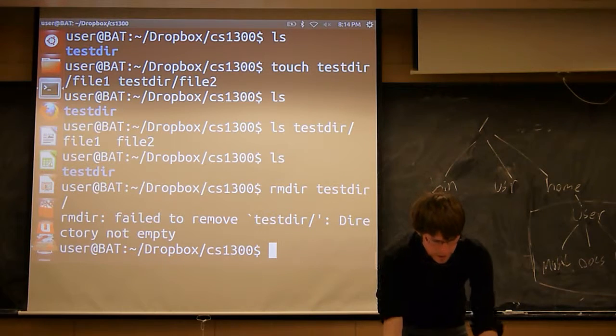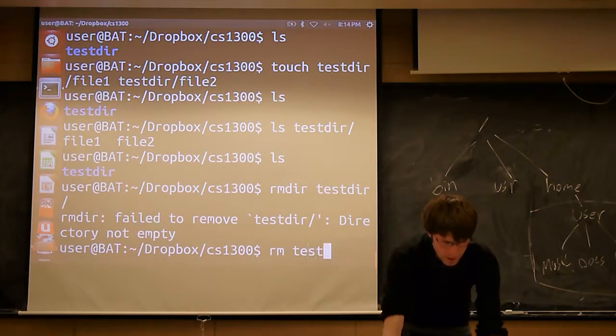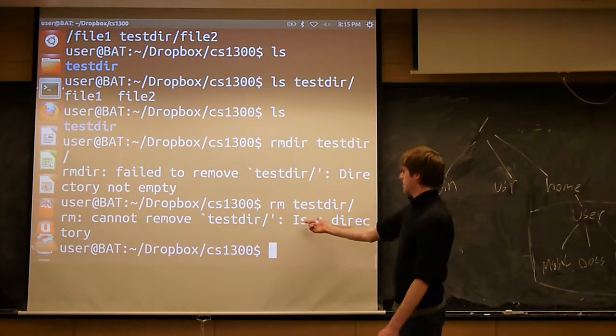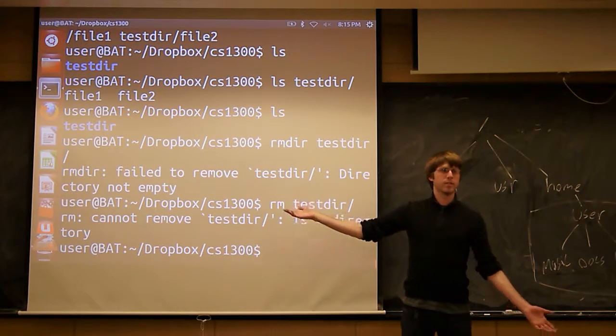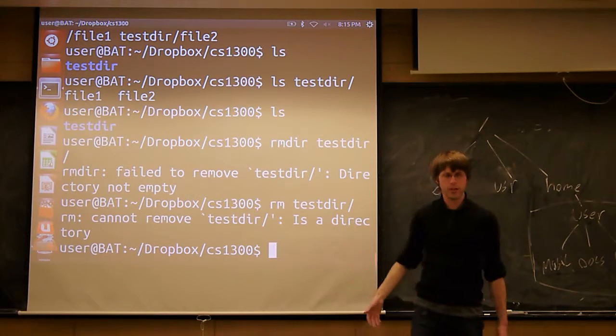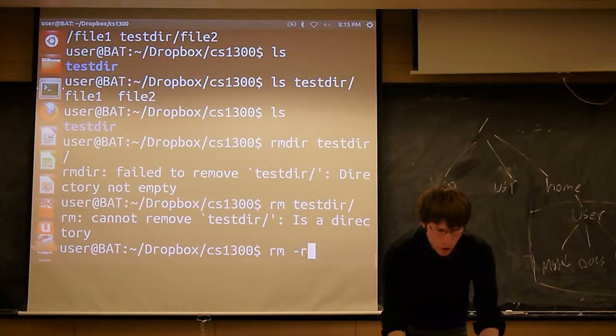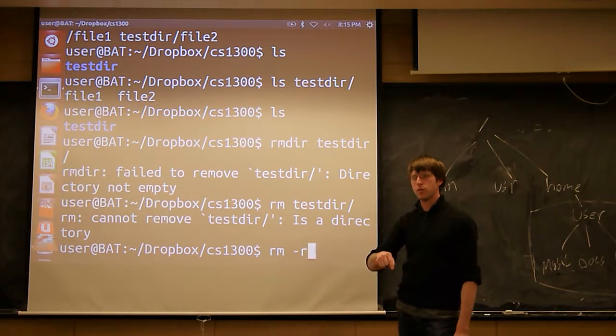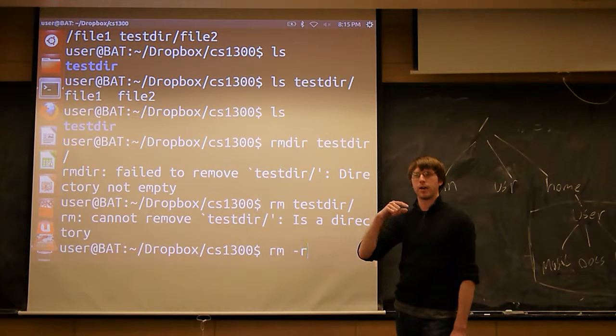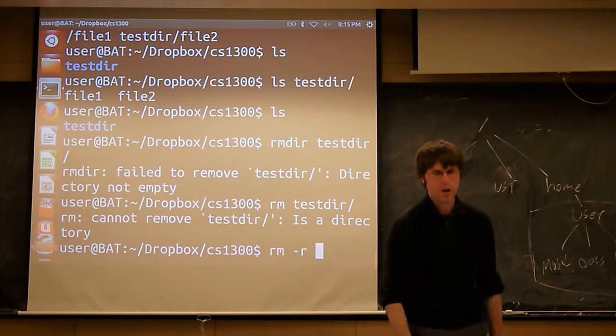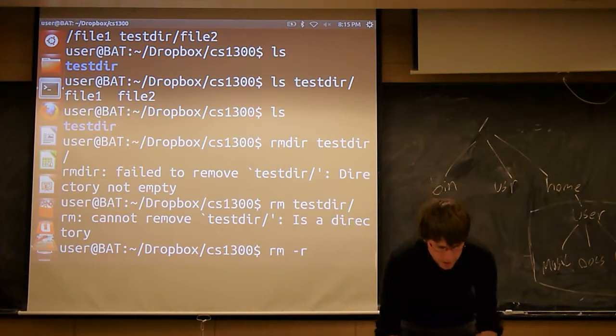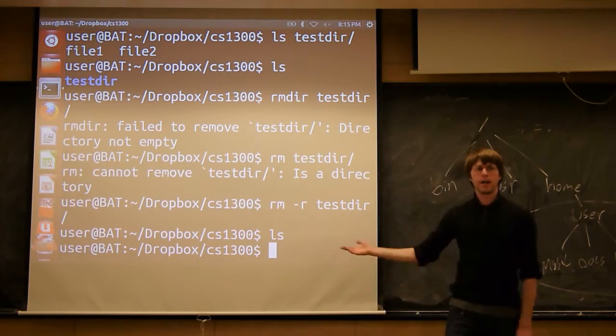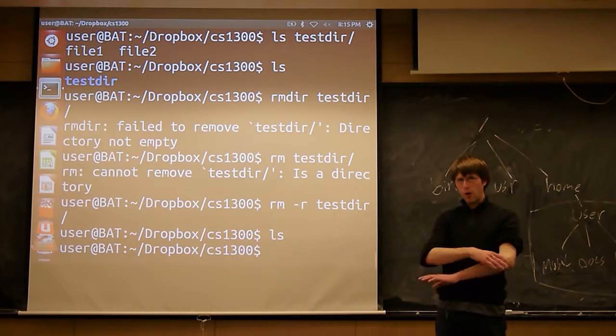The rm command can actually deal with this for us. If we use the rm command and I just run it on test directory, I'm going to also get an error. It's going to say cannot remove it, it's a directory. So what do we do? Remove directory command won't remove it because it's not empty. The rm command won't remove it because it's a directory. Well, there's a way to deal with that. If you do rm -r, r is for recursive, rm -r followed by a directory name will automatically go into that directory, delete everything inside of it, and then come up and call remove directory on the directory itself. So rm -r is what people almost always use when they want to remove a directory. Now if I do rm -r test directory, it completes without error, the directory is gone, as are all the files that were inside of it.